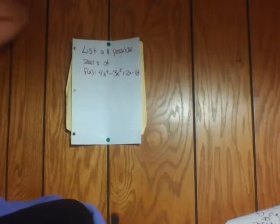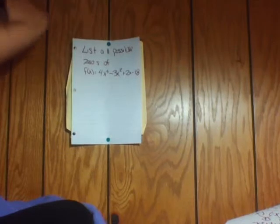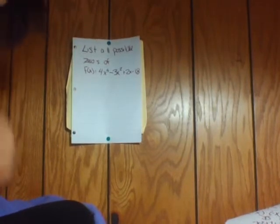My problem is to list all the possible rational zeros of f(x) = 4x^5 - 3x^2 + 2x - 18.